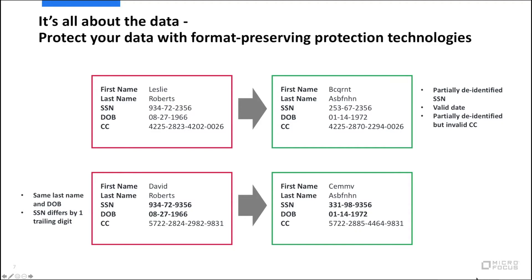We can know for certain that under the right conditions — using the same system and the same encryption key — we will always get the same output value from the same input value. Second to note: although the social security numbers originally differed by only a single digit in the last four, the encrypted social security number is completely different. This demonstrates that we are using the full nine digits to actually create that new social security number. The date of birth is exactly the same as the first person's encrypted date of birth above — again showing deterministic protection of the data.